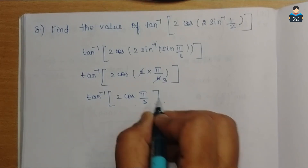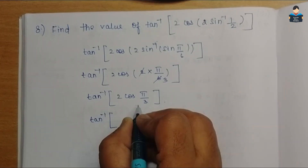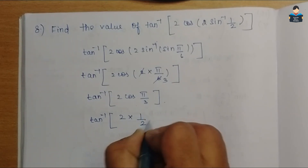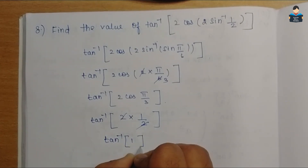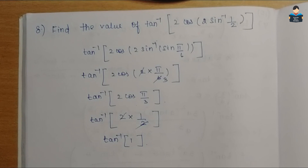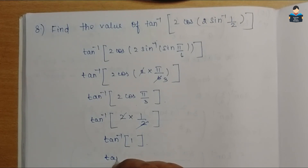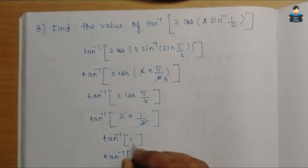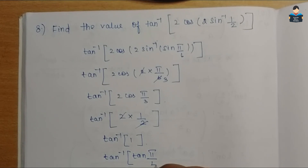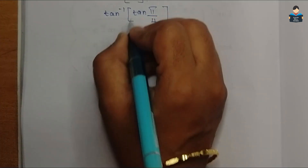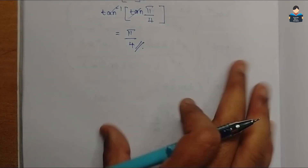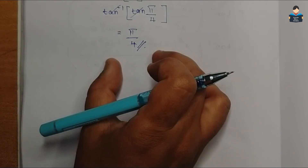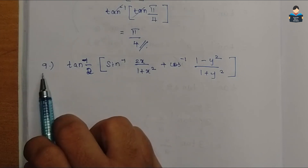cos(π by 3) equals cos 60° equals 1 by 2. So 2 into 1 by 2 gives 1. Now we have tan inverse of 1. From the trigonometric table, tan 45° equals 1, so tan inverse of 1 equals π by 4. Therefore the answer to Question 8 is π by 4.